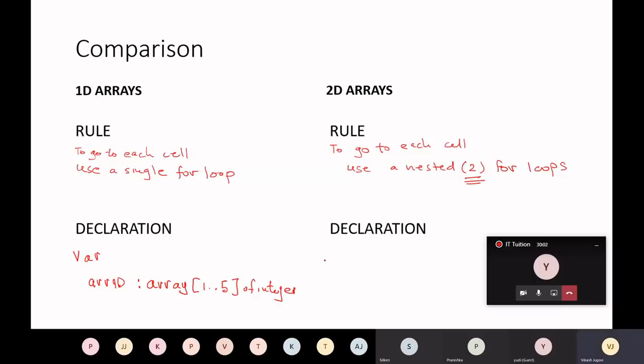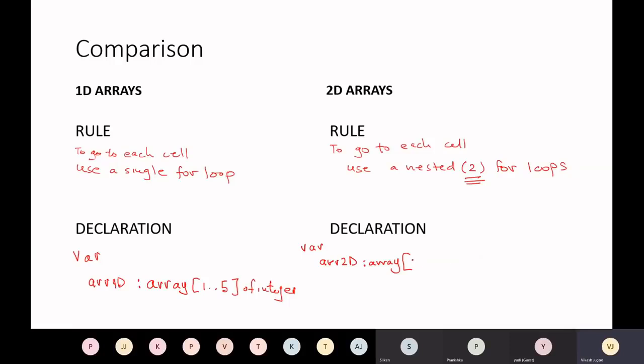If you're declaring a 2D array, you are then going to say the name, well, this is obviously in the variable section, so it's going to be ARRAY2D, colon, ARRAY. So now things are going to change a little. And you are now going to specify how many rows. So in my previous example, I had three rows, 1.3, 1.4, how many columns, and then the data type of integer. So the only difference is you're now specifying your number of rows, and here you're specifying your number of columns. That's how you'll go about declaring your two-dimensional array.